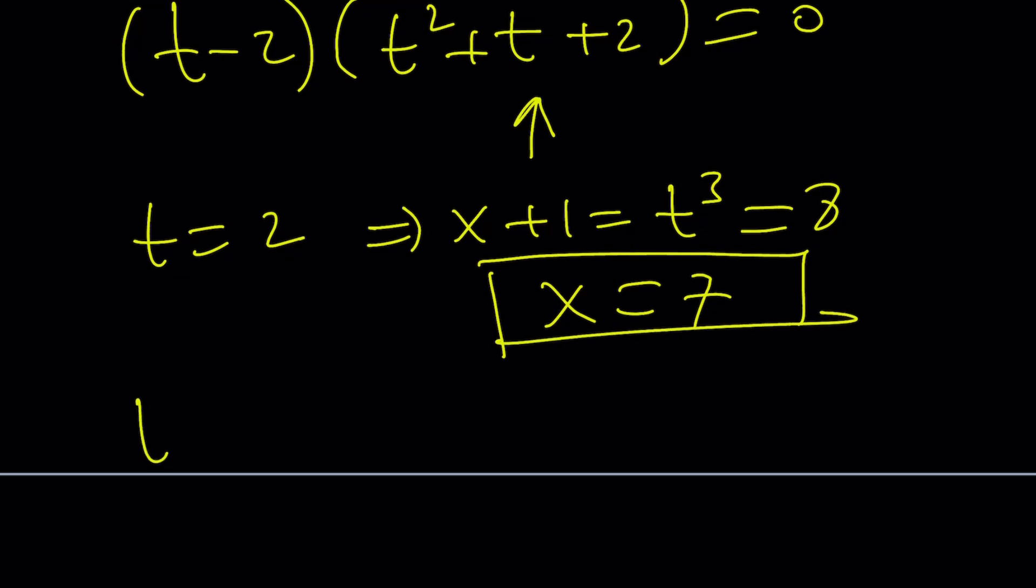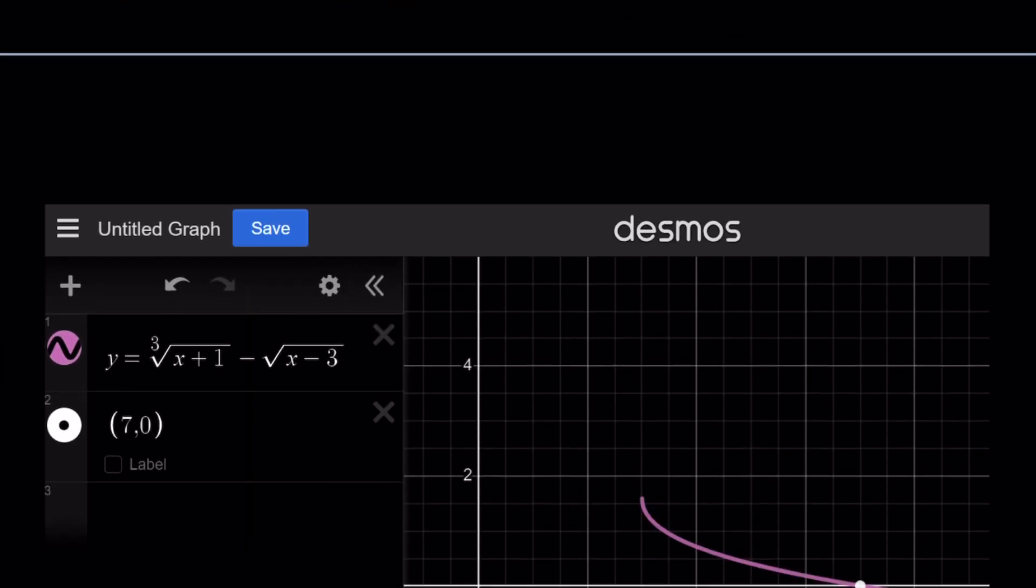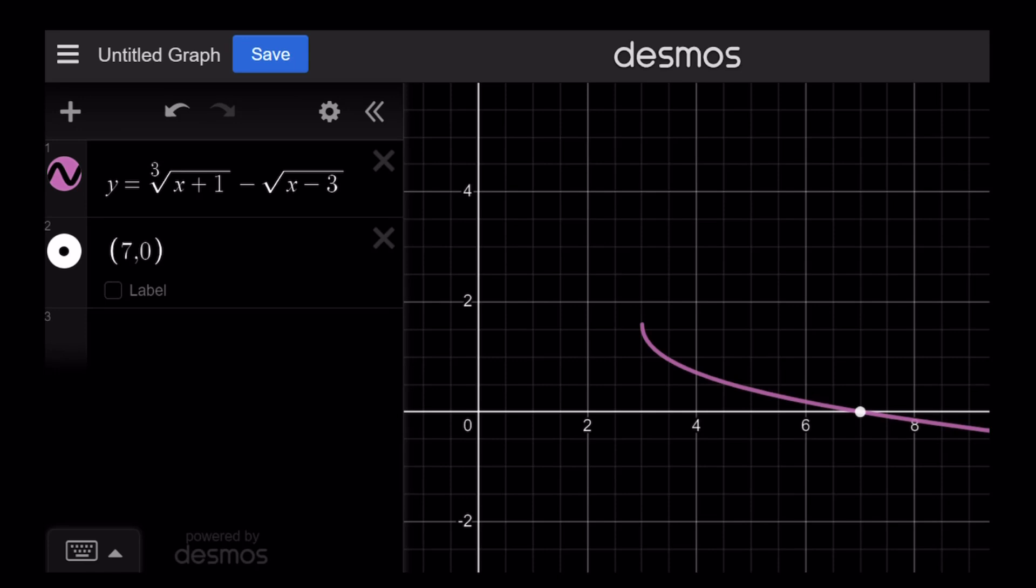The other solutions can be found by setting this equal to 0, finding the complex solutions, and so on. Let me go ahead and show you the graphs and we'll finish up.